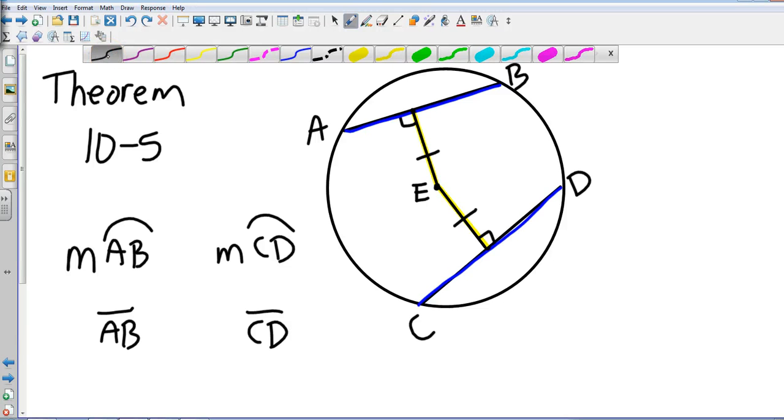Which means AB is congruent, according to this drawing, to CD. So this is congruent to this, the whole thing. Which also makes our arcs congruent, because of theorem 10-1. If your chords are congruent, then your arcs are congruent as well.